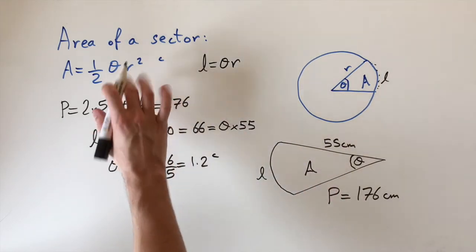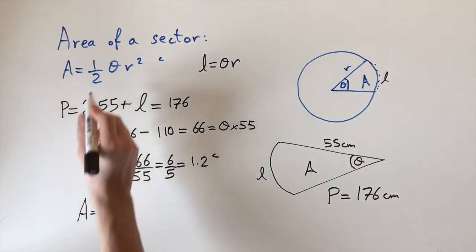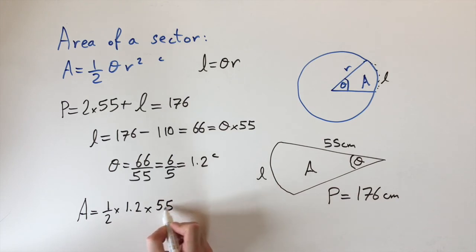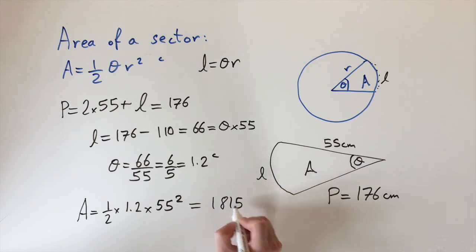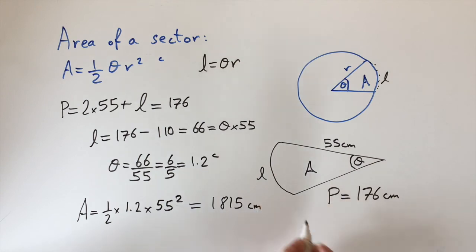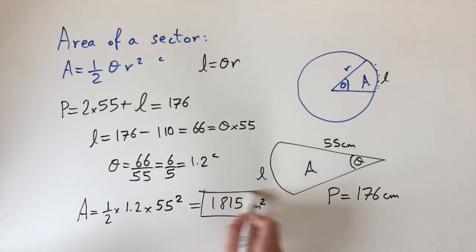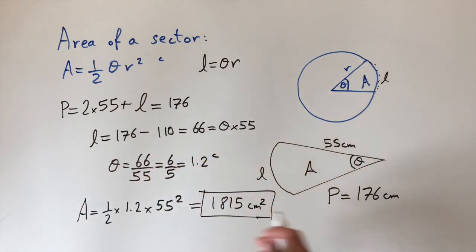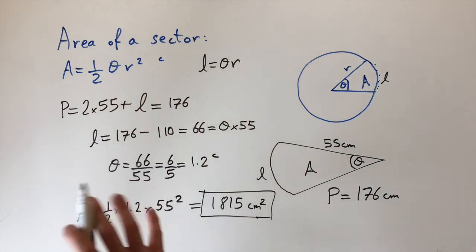Now we have the radius (55 cm) and the angle (1.2 radians), so we can find the area using Area = ½ × theta × r squared: Area = ½ × 1.2 × 55 squared = 1815 cm squared. It's really good to get familiar with this formula, as there are all types of geometry problems involving sectors with these formulas.